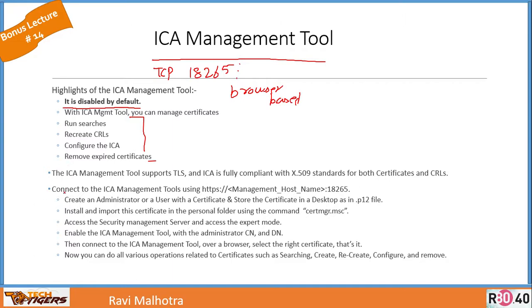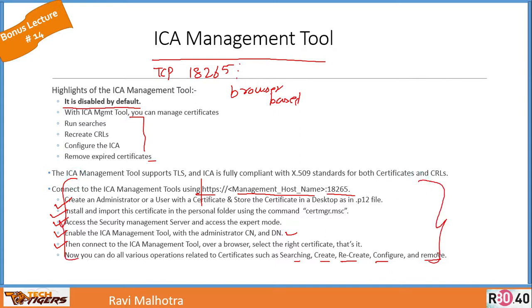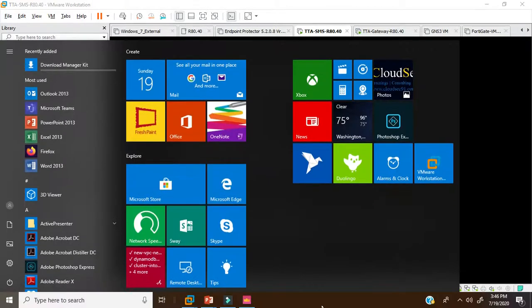In order to connect to the ICA Management Tool, you go to HTTPS followed by the management IP address and port number 18265. You need to create an administrator with a certificate, store the certificate on the desktop as a .p12 file, install and import the certificate as a personal certificate, access the Security Management Server in expert mode, enable the ICA Management Tool with the administrator CN, and then connect to the ICA Management Tool over a browser to perform all certificate-related operations such as searching, recreating, configuring, and removing.